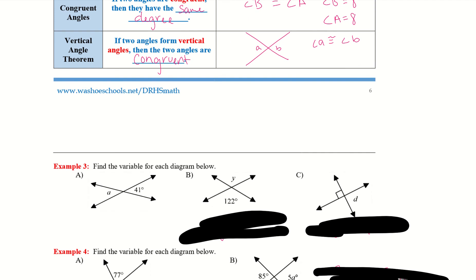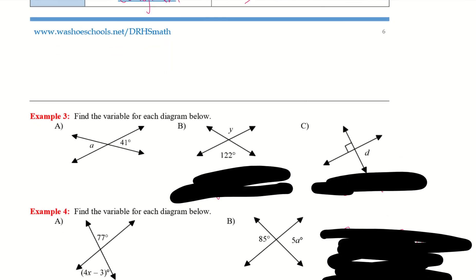Let's try example 3. I'm going to help with A, then I want you to try B and C. For A, these are vertical angles, so they are equal to one another — A equals 41. Now try B and C on your own: label Y and label D and see what you get.